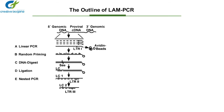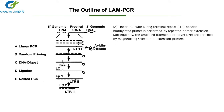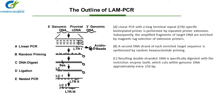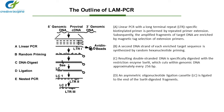The outline of LAM-PCR: A. Linear PCR with a long terminal repeat-specific biotinylated primer is performed by repeated primer extension. Subsequently, the amplified fragments of target DNA are enriched by magnetic bead selection of extension primers. B. A second DNA strand of each enriched target sequence is synthesized by random hexanucleotide priming. C. Resulting double-stranded DNA is specifically digested with the restriction enzyme Tsp509I, which cuts within genomic DNA approximately every 256 bp. D. An asymmetric oligonucleotide ligation cassette is ligated to the end of the Tsp509I-digested fragments.